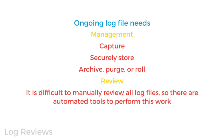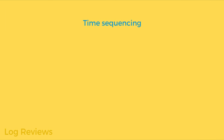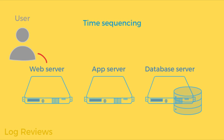One of the issues you'll have to deal with is time sequencing across servers. When you're tracing the actions of an attacker, or just an event or a chain of events that occur in your system, it's likely that the presence of a process or a user jumped from machine to machine. For example, with a web application, the user connected to your web server, the web server established a connection to the app server, and the app server then established a connection with the database server.